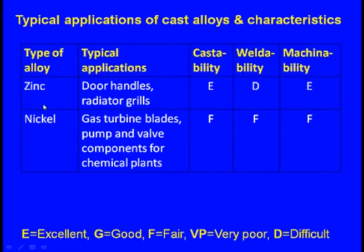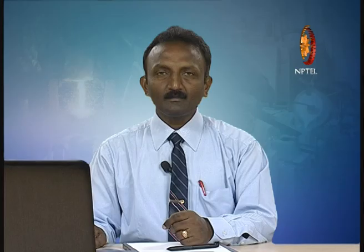Zinc alloys are used for door handles and radiator grills. Cast ability is excellent, weldability is difficult, and machinability is excellent. Nickel alloys are used for gas turbine blades, and pump and valve components for chemical plants. Cast ability is fair, weldability is fair, and machinability is also fair.